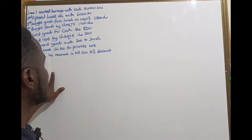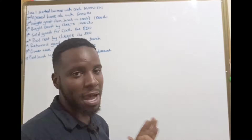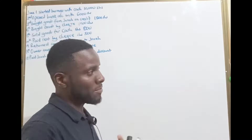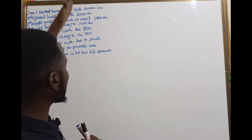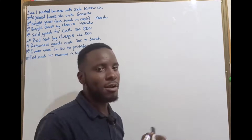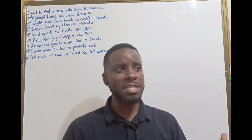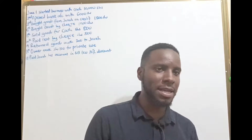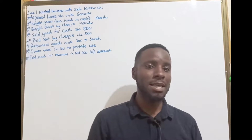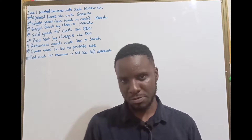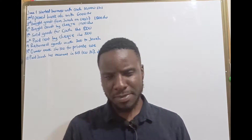We are looking at a certain business X and these are the transactions that took place in the month of June. They are telling us that he started business with cash worth 10,000 shillings. This is a disclaimer: when you hear that a person started business with a certain amount of money or assets, whatever you start the business with is capital. Everything that you start business with is capital.